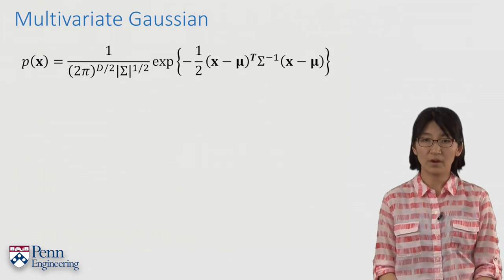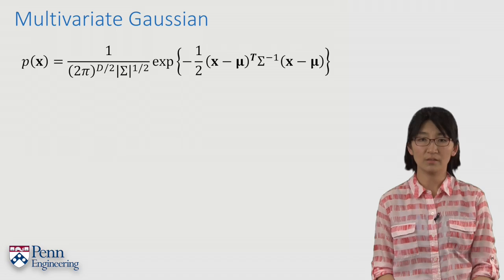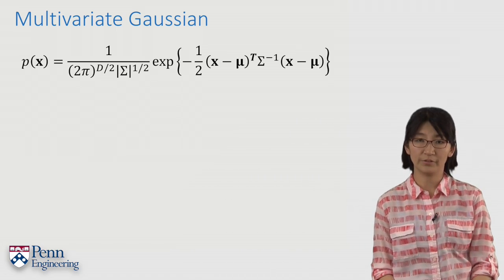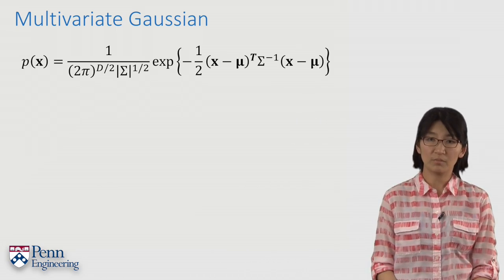Mathematically, the multivariate Gaussian is expressed as an exponential coupled with a scalar factor. This is the same as the 1D Gaussian.